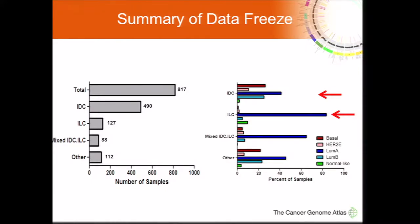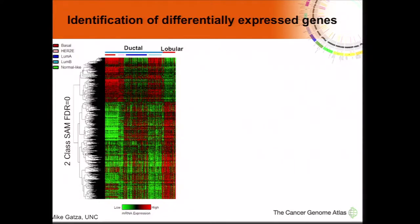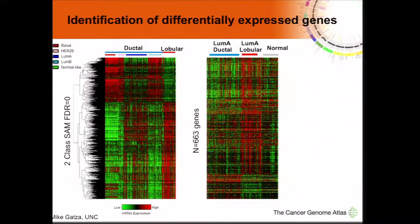If you do a direct comparison between ductal and lobular, the underlying molecular subtype would clearly confound the analysis. When we look at genes differentially expressed between ductal and lobular using a two-class SAM analysis, the lobular group of dysregulated genes very much mimics what's dysregulated in the luminal A ductal samples. It's only when you do a direct comparison between luminal A ductal and lobular that you identify differentially expressed genes in each subgroup. These include a number of genes, including E-cadherin, which is lost in lobular tumors.